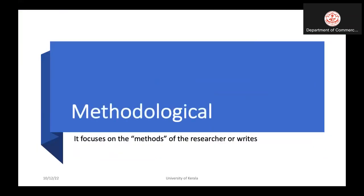Another style is methodological. We can use different methodologies — some studies use qualitative methodology, some use quantitative methodology, and some use a triangulation or mixed methods approach. We can write reviews based on what studies used qualitative, quantitative, or mixed methods. If there is any mismatch across the findings of qualitative and quantitative studies, that is the kind of aspect we examine in a methodological review.